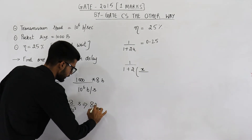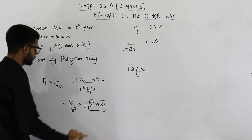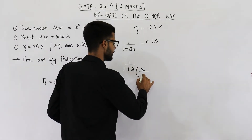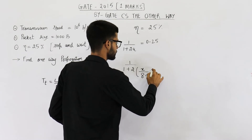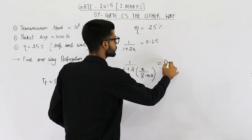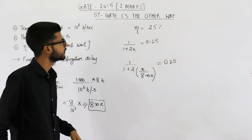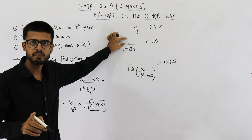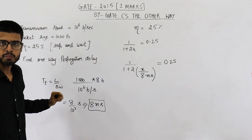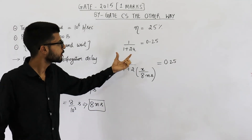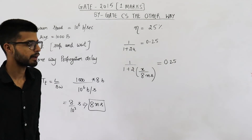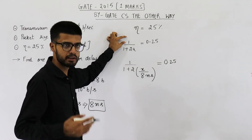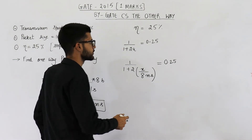Since tt is 8 milliseconds, tp/tt will be x upon 8 milliseconds, and this must equal 0.25. Recall how we got the formula 1 upon (1 + 2a): the window size in stop-and-wait is 1, meaning we send only one packet, whereas we can send a total of (1 + 2a) packets in the time tt + 2tp. So efficiency is what we send divided by what we can send in the best case.